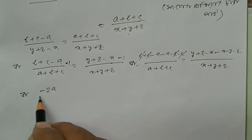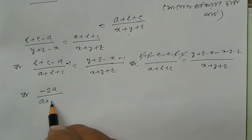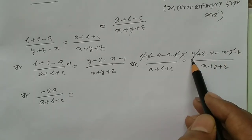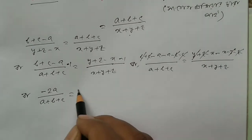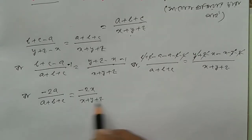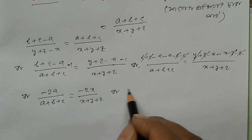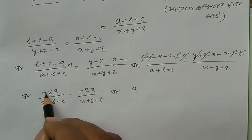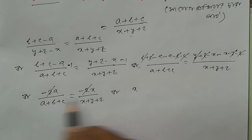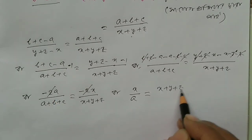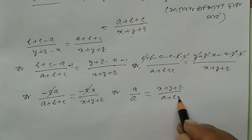This gives minus 2A by (A plus B plus C) equals minus 2X by (X plus Y plus Z), so X by A equals (X plus Y plus Z) by (A plus B plus C).